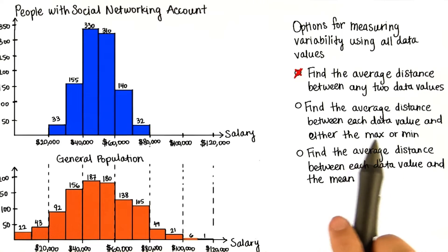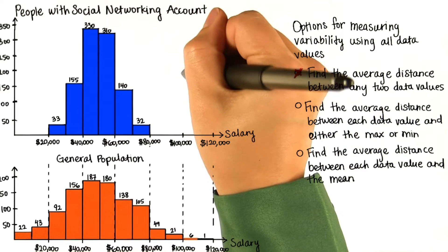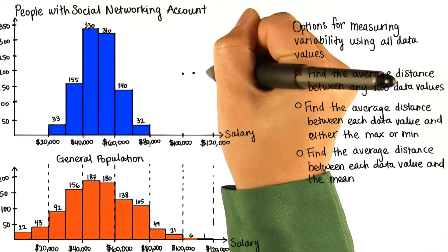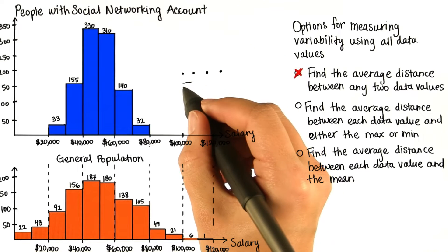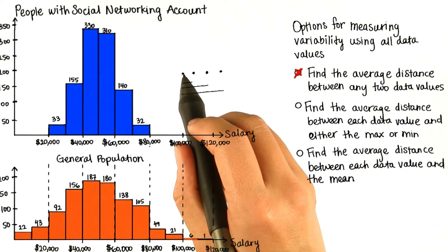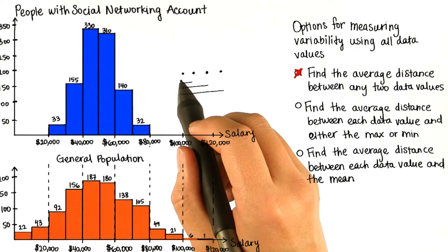Okay, so what if we found the average distance between each data value and either the max or the min? If we had four data values and we chose the min, we would only have to find three distances - well, I guess four actually, including the min itself.